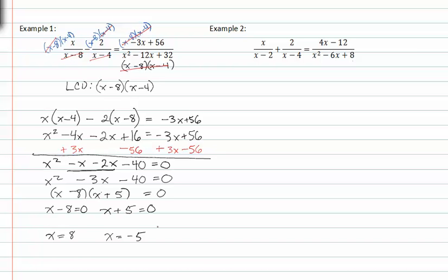Here is where it changes. We have to check for extraneous solutions. When we do that, we take the values that we've found for x, and plug them in or substitute them into our denominators. Notice that wherever there's an x minus eight, if we were to plug eight in for x, we would get zero in the denominator.